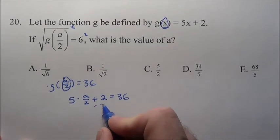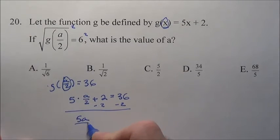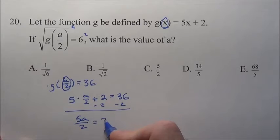Now solving this, I'm going to subtract 2 from both sides. That's 5a/2 equals 34.